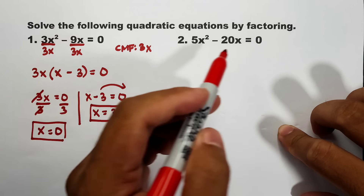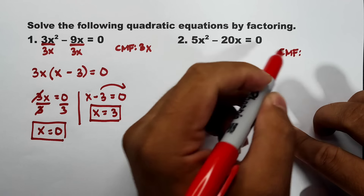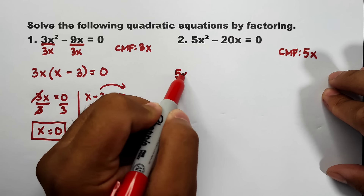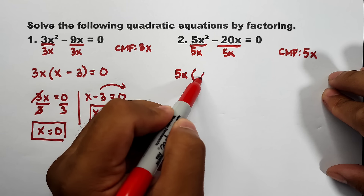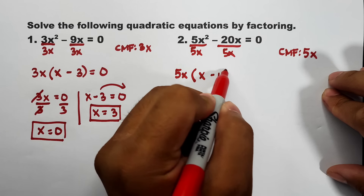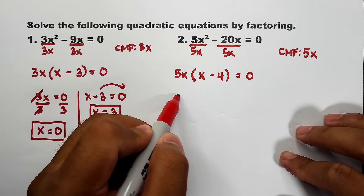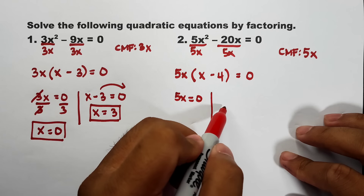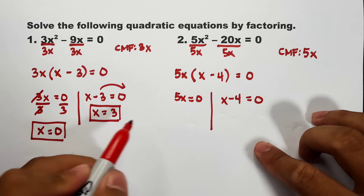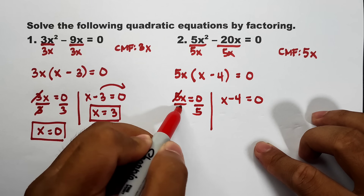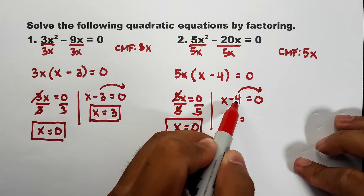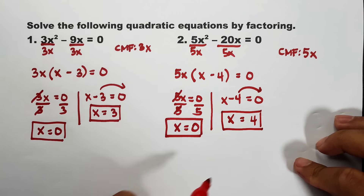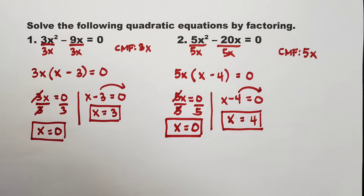For number 2, 5x² - 20x = 0, same process — get the common monomial factor. What is common between 5 and 20? The answer is 5. The common variable is x, so the first factor is 5x. Dividing: -20x ÷ 5x = -4, giving factors 5x(x - 4) = 0. Equating: 5x = 0 gives x = 0; x - 4 = 0 gives x = 4.